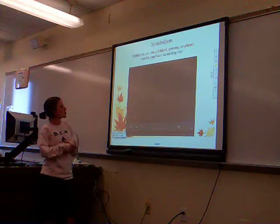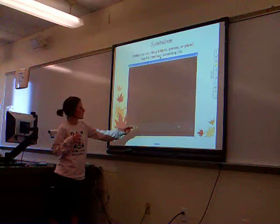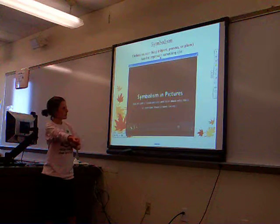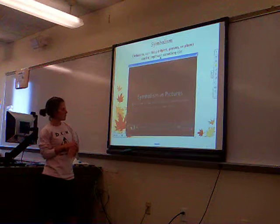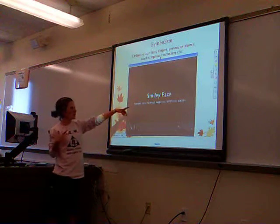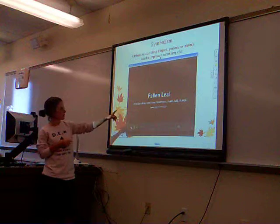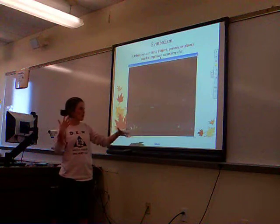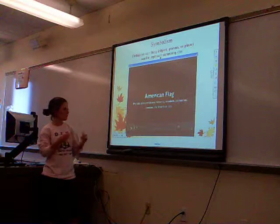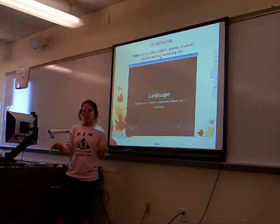Symbolism is when an object, person, or place represents something else, and it can express communication beyond literal meaning. This is just some symbolism in pictures. For example, leaves can symbolize loneliness, death, fall, change, or the coming of winter. The American flag has symbolism — freedom, patriotism, heroism, 4th of July. We have symbols that mean certain things to us, and symbolism is different in different countries.